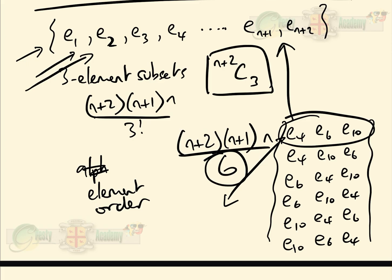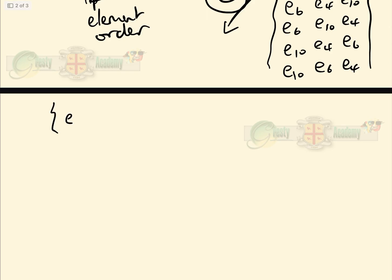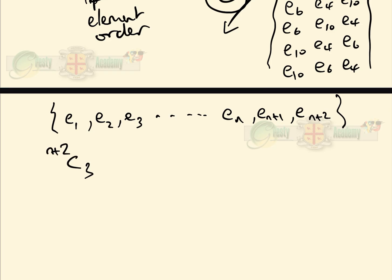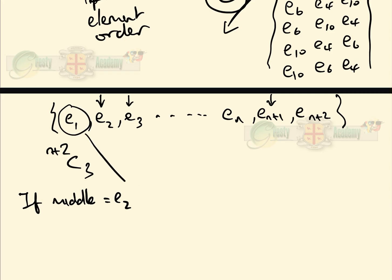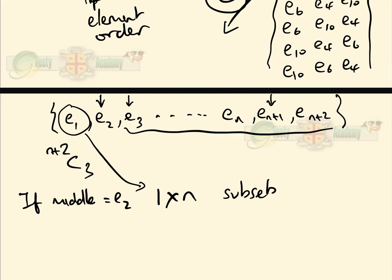Now for the key third method. With our set e1, e2, ..., e(n+1), e(n+2), we know the number of 3-element subsets (order doesn't matter) is C(n+2, 3). We'll classify subsets by their middle element. If the middle element is e2, there is 1 choice for the element before it and n choices after it, giving 1×n subsets where e2 is the middle element.